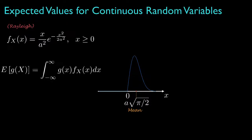In general, the expected value for any function of a random variable is computed by integrating the product of the density function and all of the values the function takes over the random variable's range.